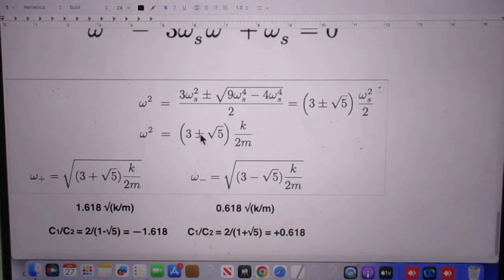With the plus sign, you have the highest frequency. With the minus sign, you have the lowest frequency. And you see here that the plus sign has the highest frequency, 1.618. And the lowest frequency, the lower frequency, 0.618.